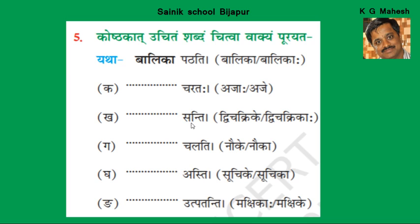Dash Santih — Asti, Staha, Santih. Santih iti Bahuvachanam. For Dvi Chikarika: Chikarika is Ekavachanam, Chikarike is Dvivachanam, Chikarikaaha is Bahuvachanam. Atra Santih iti Bahuvachanam, therefore Dvi Chikarika is the right answer.